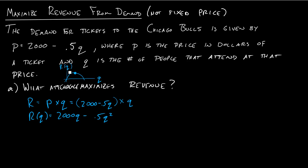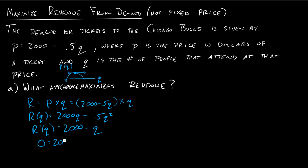How do I find that point? That point corresponds to when the derivative of my function is zero — it corresponds to the only point on this graph that has a horizontal tangent line. So I'll take R prime of q and get 2000 minus q (since 0.5 times 2 equals 1). Setting this equal to zero gives zero equals 2000 minus q, or q equals 2000.